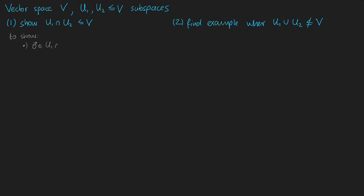To show that a vector space is a subspace of another vector space, we need to verify that the zero vector is included, and we also need to verify that lambda times the vector u plus mu times the vector v is also an element of our subspace.